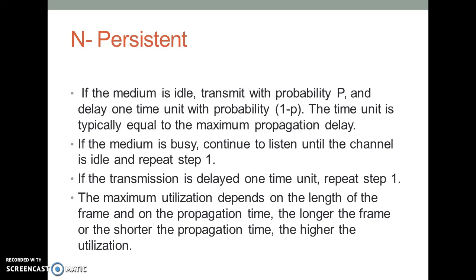P-Persistent: if the medium is idle, transmit with probability P and delay one time unit with probability 1-P. The time unit is typically equal to the maximum propagation delay. If the medium is busy, continue to listen until the channel is idle and repeat step 1. If the transmission is delayed one time unit, repeat step 1. The maximum utilization depends on the length of the frame and on the propagation time. The longer the frame or shorter the propagation time, the higher the utilization.